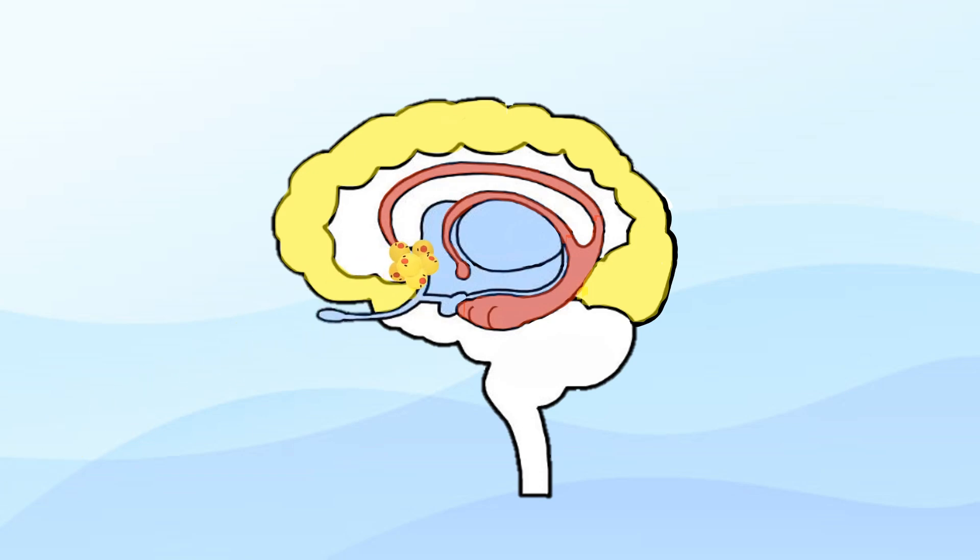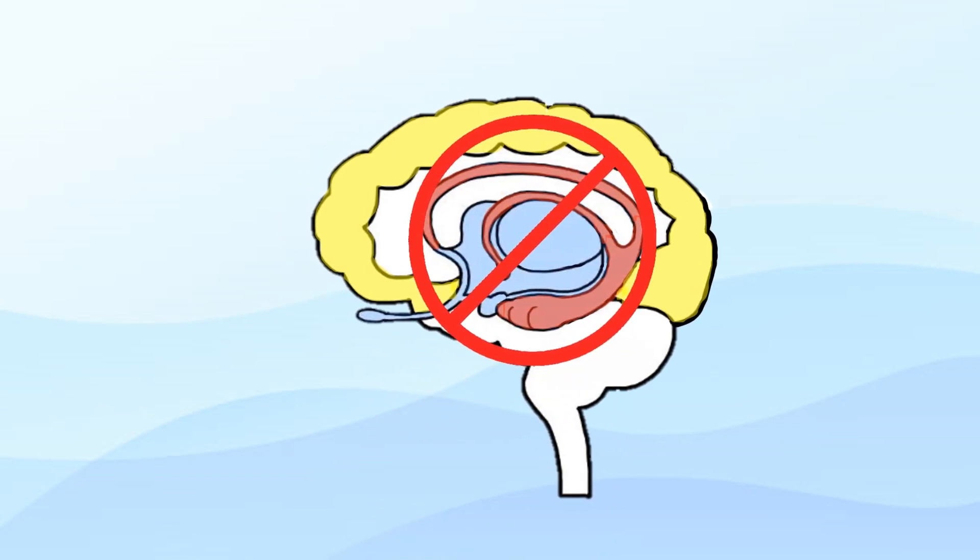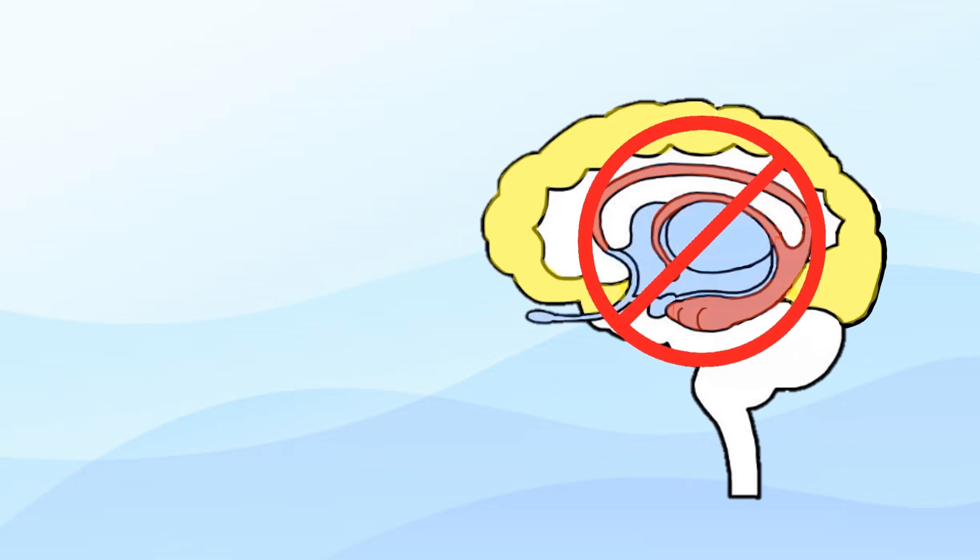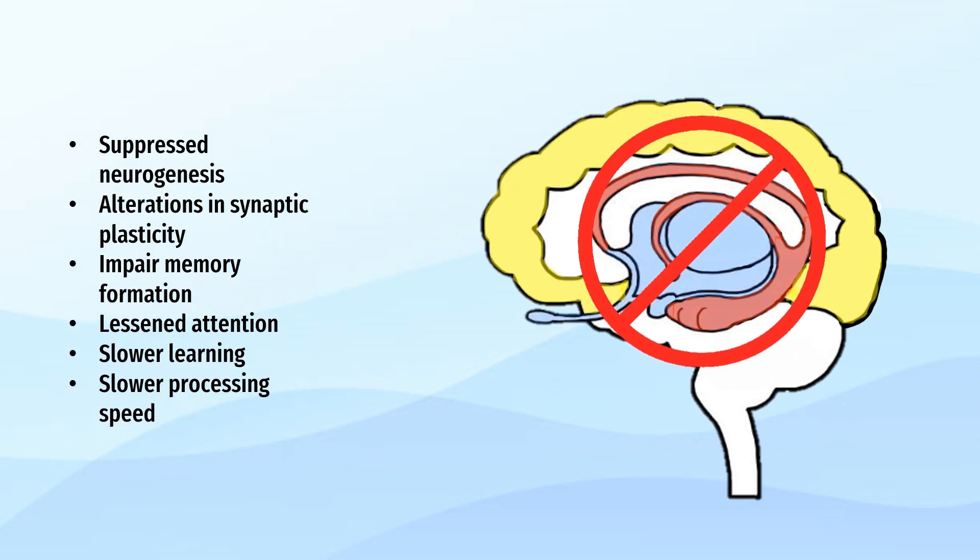Certain cancer treatments inflict damage upon the hippocampus due to elevated levels of fat molecules. Extensive research has demonstrated that chemotherapy disrupts hippocampal function, leading to suppressed neurogenesis, the generation of new neurons, and alterations in synaptic plasticity.